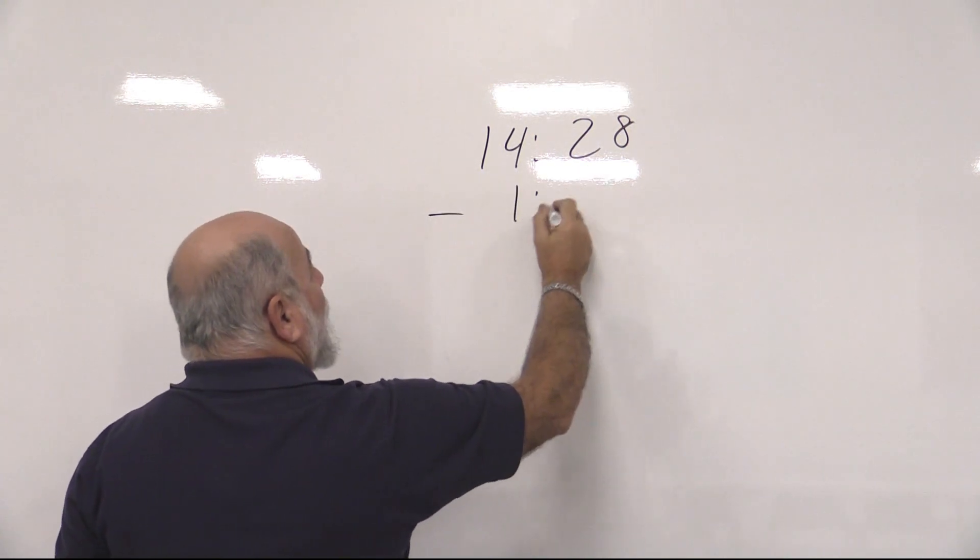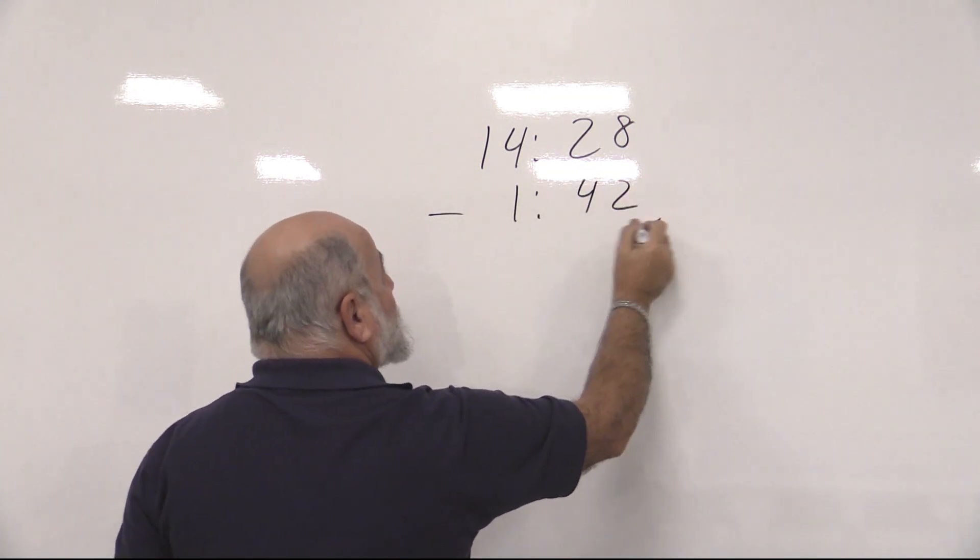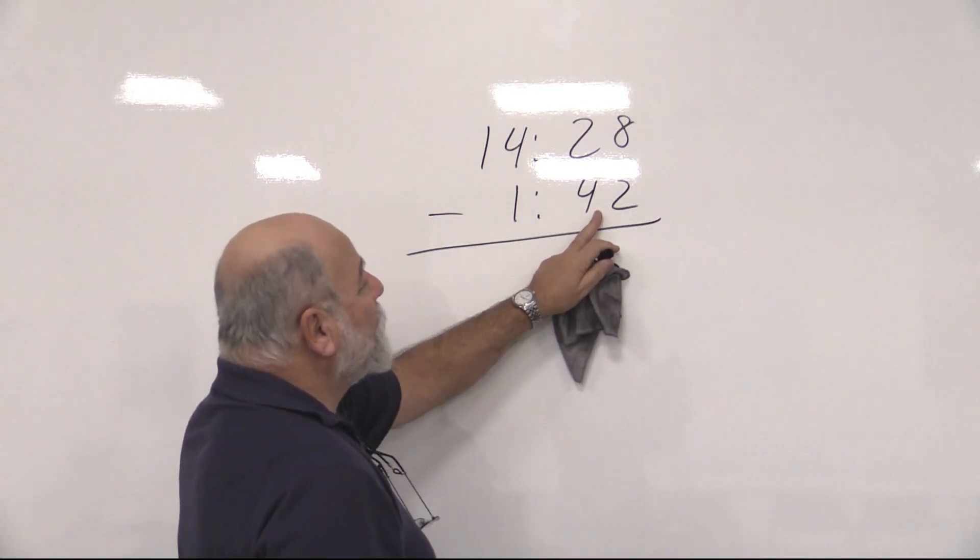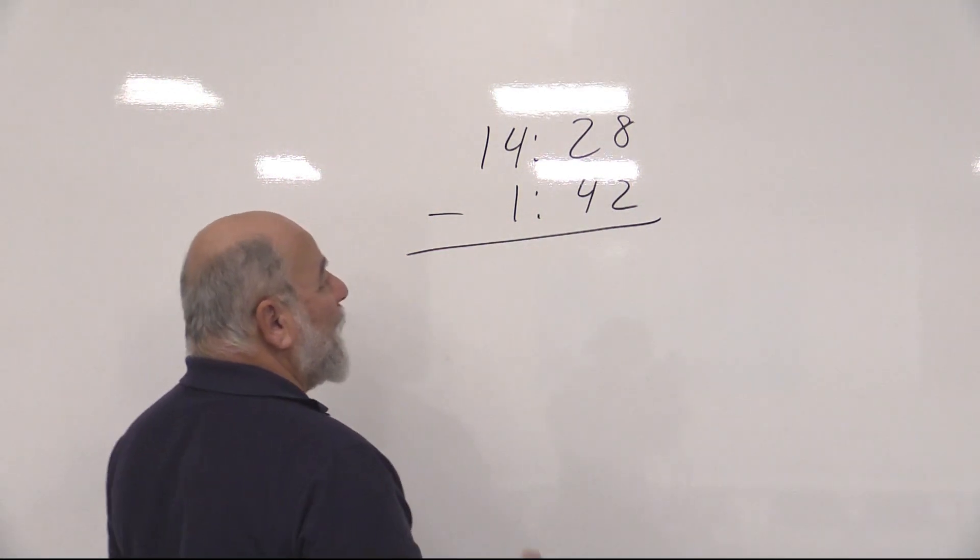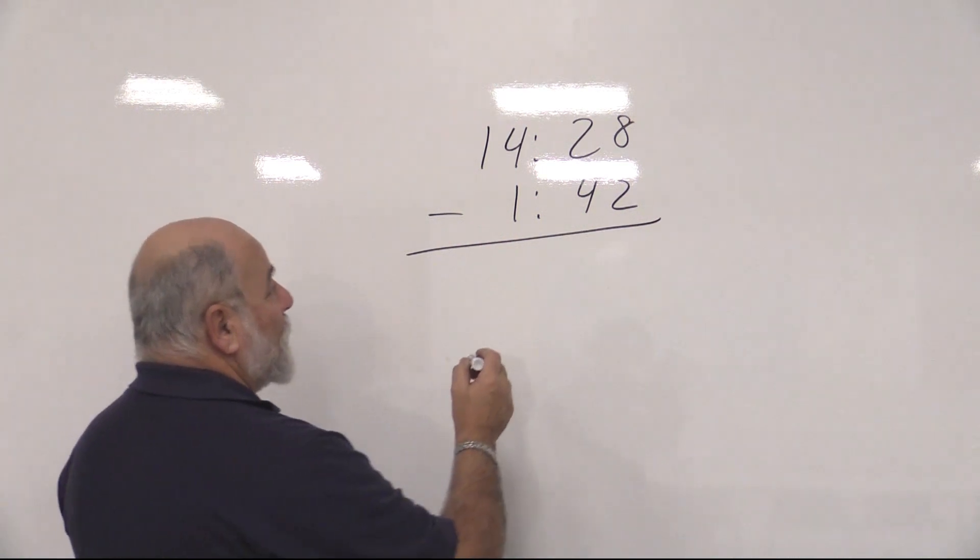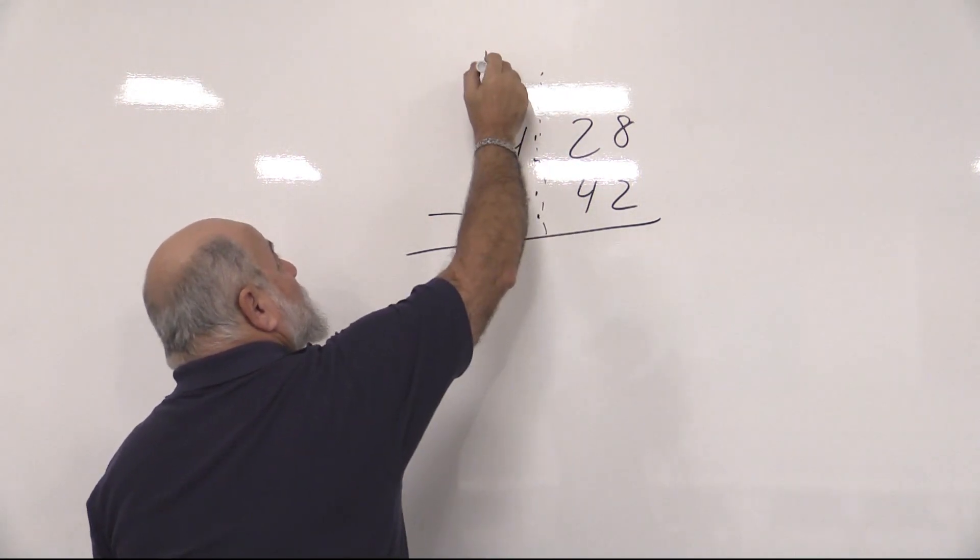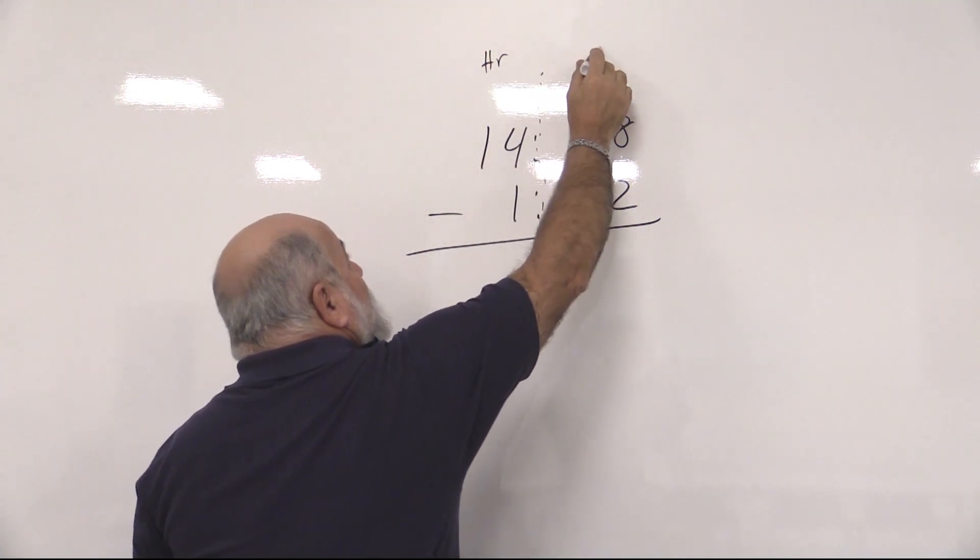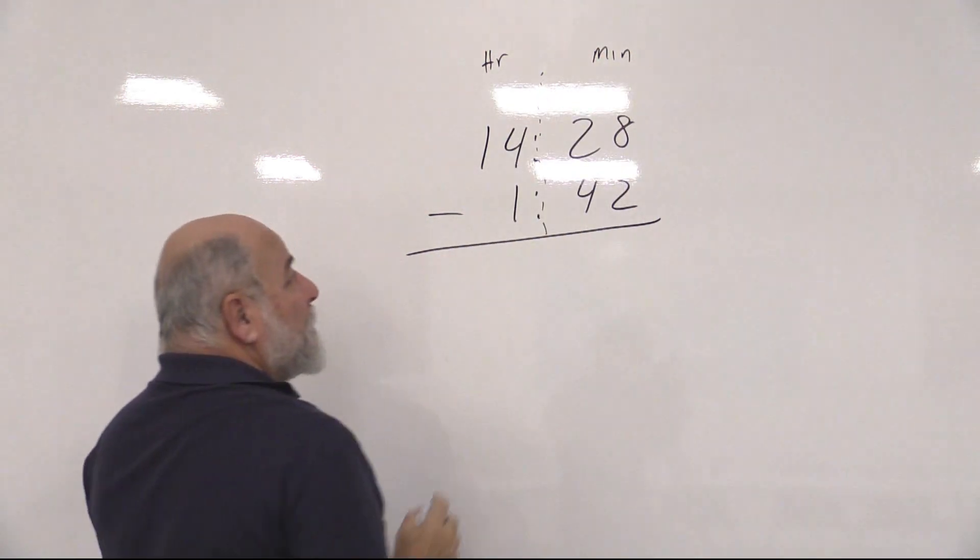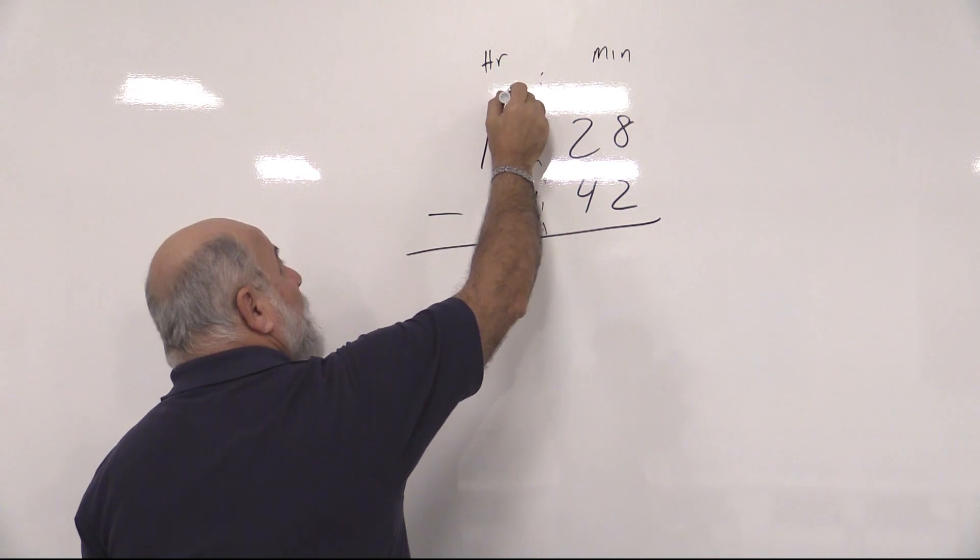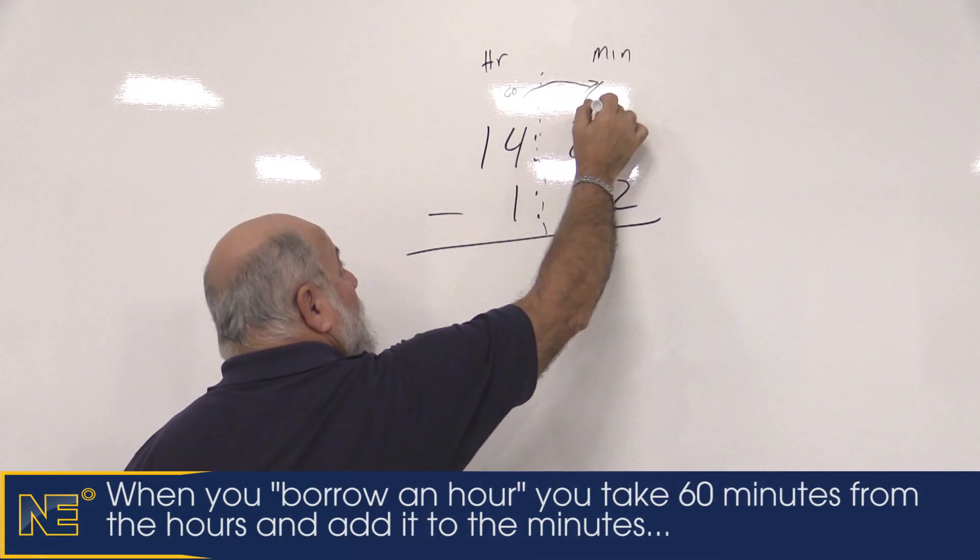If we have to subtract 1428 and we had to subtract an hour and 42 minutes, we have a bit of a problem. 42 minutes we can't subtract from 28, so we need to borrow an hour. What I like to do is just put a little dotted line here to remind you that this is hours and this is minutes. If we're going to borrow an hour, there are 60 minutes in an hour. We're going to bring that 60 minutes over to here.